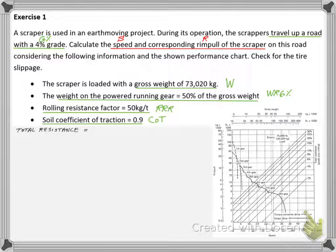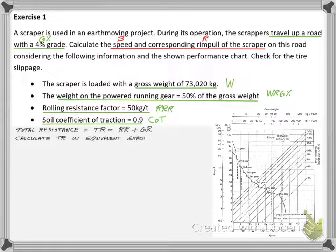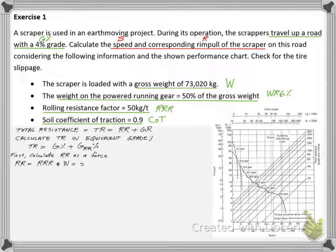We know that the total resistance TR equals rolling resistance RR plus grade resistance GR. We need to calculate TR in a percentile value to be able to use the performance chart. Since we are already given the grade resistance in percentile form, we need to calculate the rolling resistance in percent value.